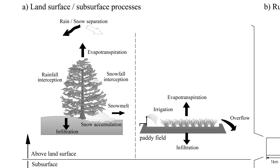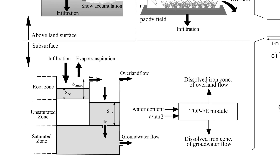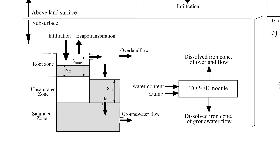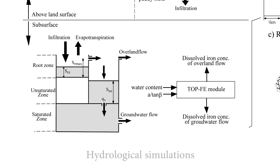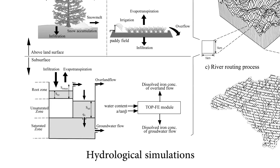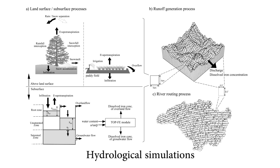This is the process occurring at the ground surface: evapotranspiration is simulated, as well as irrigation. And this is the process occurring below the surface. By using these hydrological simulations, you can get a comprehensive understanding of the hydrological cycle.